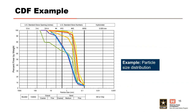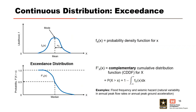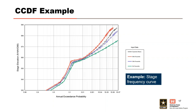An example of a CDF or non-exceedance distribution is a gradation curve, where particle size is plotted against percent finer by weight. For the same PDF, an exceedance distribution — a complementary cumulative probability distribution function — can be developed; its equation is one minus the CDF. Flood and seismic hazard curves are both examples of an exceedance distribution. A stage frequency curve, if rotated clockwise making the x-axis the new y-axis, matches the shape of the complementary cumulative distribution function.